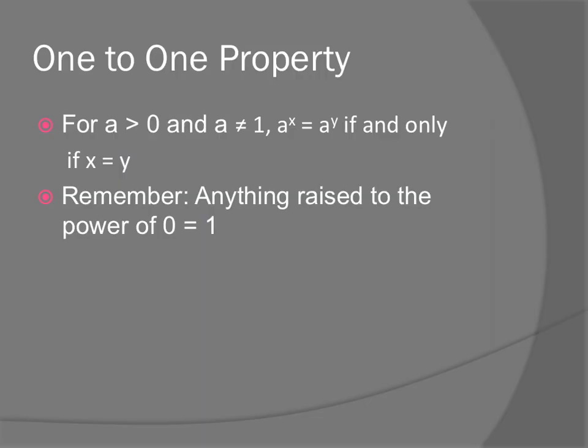Left off at the one-to-one property. So the one-to-one property says, which is true for where x is greater than zero, the base has to be positive and it can't be one because then it would be a constant function. If those two things are true, then a to the x would equal a to the y if and only if x equals y.